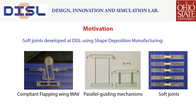Larger variations of similar soft joints are shown in the figure on the right. The figure in the center shows two parallel guiding mechanisms of various dimensions. However, due to the change in the material of the beams, their stiffness is similar, as verified by experiments. These are some applications of different kinds of soft joints.